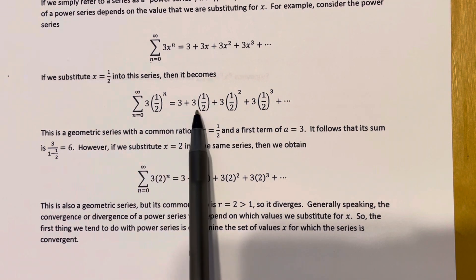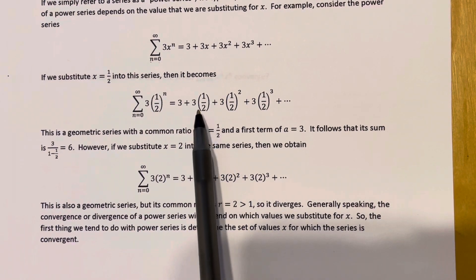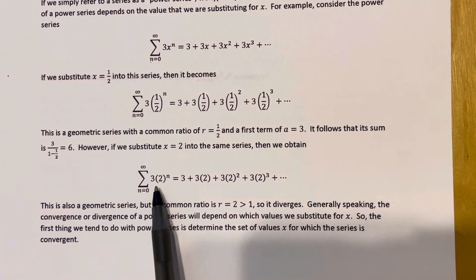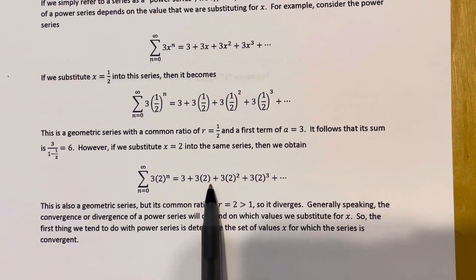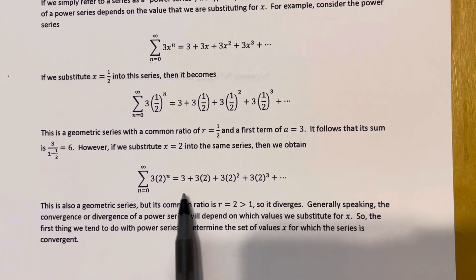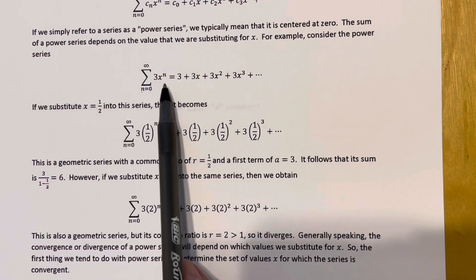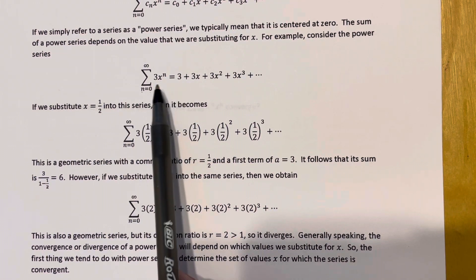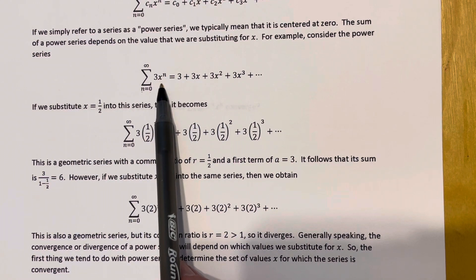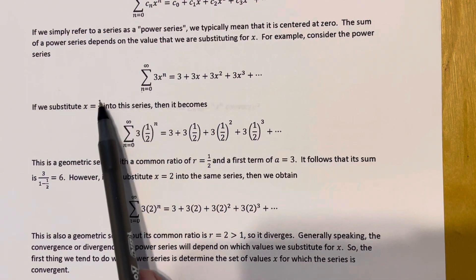But what if we plug in x equals two? Then the series becomes 3 plus 3 times 2 plus 3 times 2 squared plus 3 times 2 cubed, and so on — another geometric series, but now the common ratio is greater than one. So that series diverges. This shows us that we can't just say a power series converges or diverges outright — it depends on what's plugged in for x. For some values of x it may converge, and for others it may diverge.